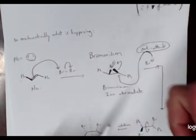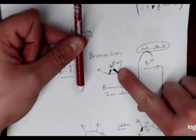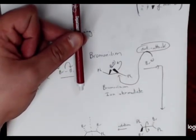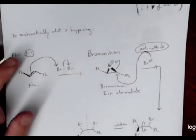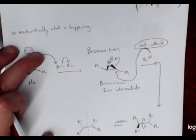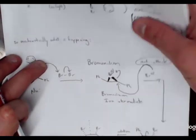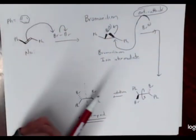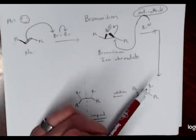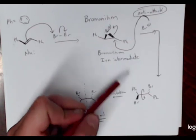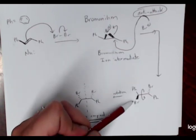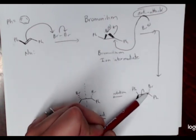So if this is the wedged bromine pointing up like this, that means that the other bromine is coming in from the bottom of it. So it's an anti attack. And so that's why we see specifically this product here. So that's the bromine that attacked from the bottom side. And that's the bromine that was a part of the bromonium ion before. So it was a wedge, it stayed a wedge. And so the other one is now opposite.